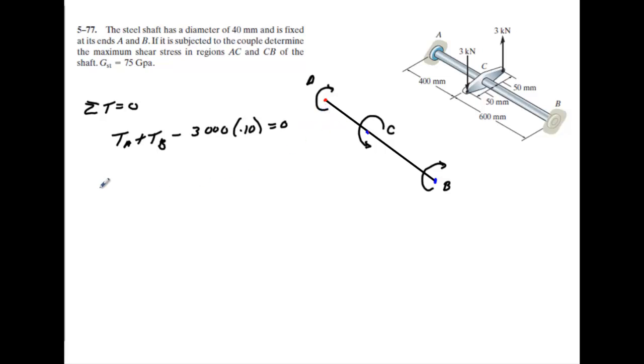We can also say that the angular twist, we'll call it theta, between C relative to A must be the same twist as from C relative to B. Which makes sense, because if this thing is going to rotate 2 degrees this direction, relative to A and relative to B must be the same. We know the equation for angular twist is just TL over JG. The torque times the length divided by the product of the polar moment of inertia times the shear modulus is going to give us angular twist.